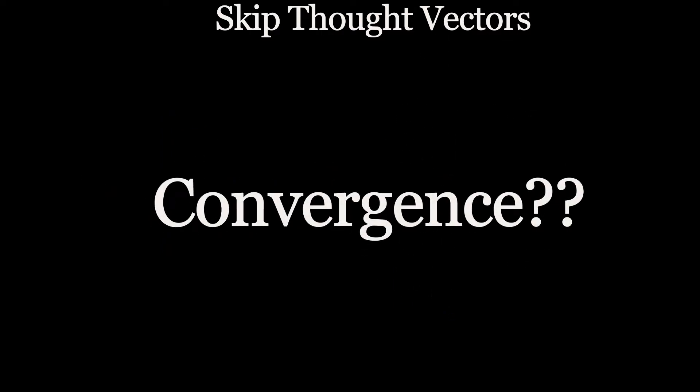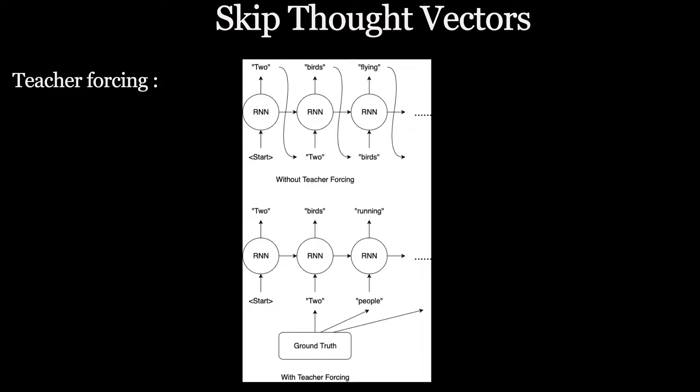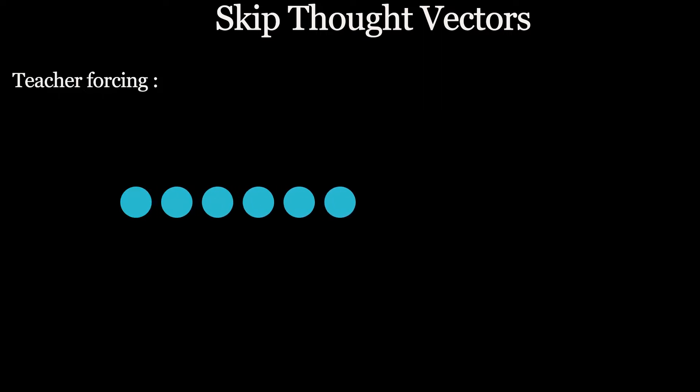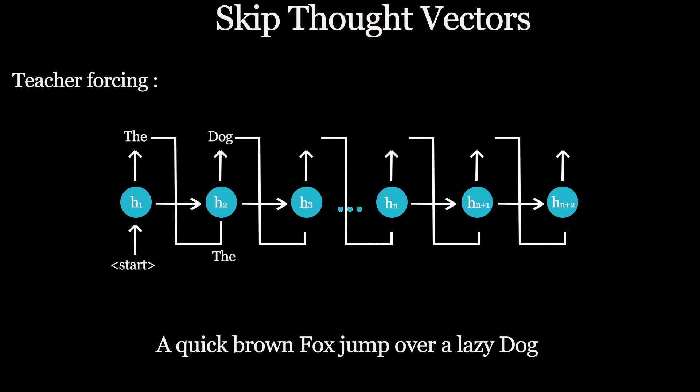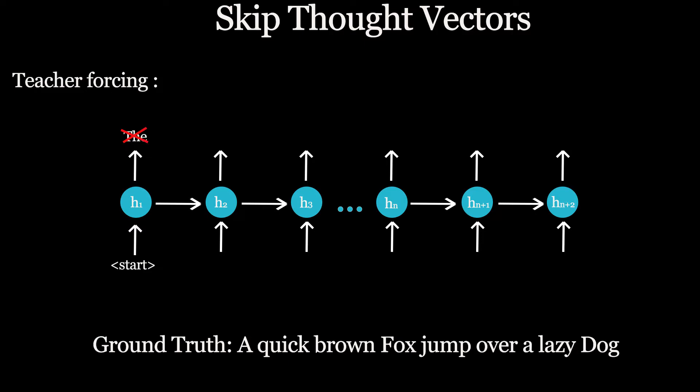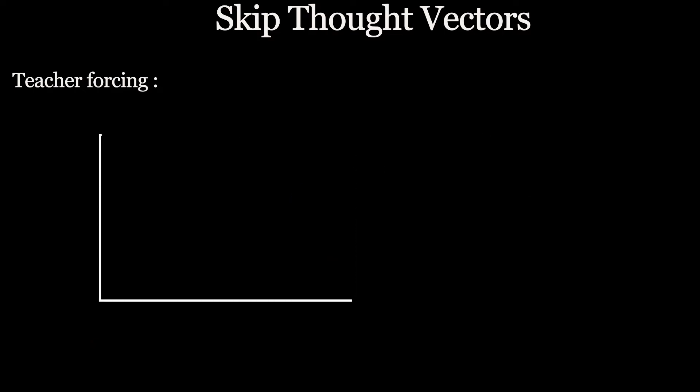So how can we make the model to converge? There is a method called teacher forcing. It's a strategy to train RNN by providing ground truth as input. Let's understand with an example. Suppose an RNN model is supposed to generate this sequence, and when it starts generating, it outputs 'the' instead of 'A', which is wrong. Normally this output will become input for the next cell. Since it already gone off track, most likely it will produce wrong sequence. So instead of feeding that wrong output to generate next word in a sequence, we will discard that output and feed the correct output as input. And we do it for the rest of the words after calculating error once it produces wrong output. So teaching a model forcefully is what teacher forcing method does. This makes the model easy to converge.